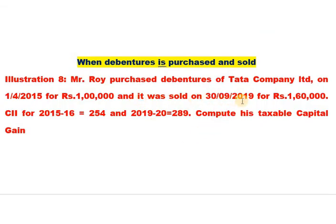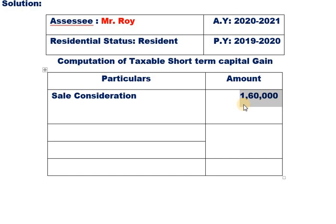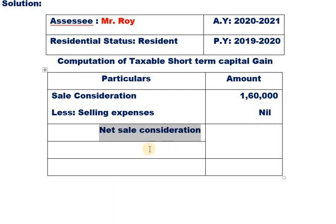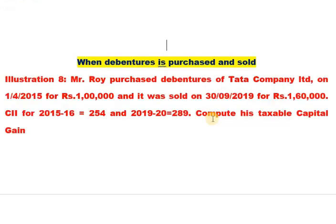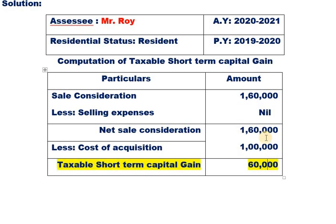The debentures were sold on 30-9-2019 for 1,60,000. Less selling expenses — the balance, that is the net sale consideration, is 1,60,000. Less cost of acquisition: because debentures do not get the indexation benefit, we use the purchase price of 1,00,000 directly. The balance of 60,000 is the taxable capital gain.